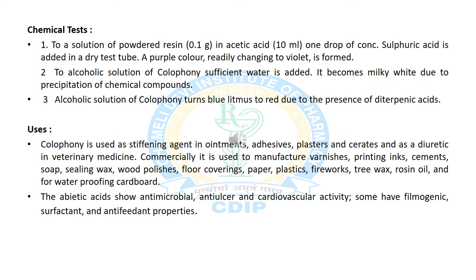Now we will discuss the various chemical tests for Colophony. In the first test, we prepare a solution of Colophony and treat it with acetic acid, then add drop-wise concentrated sulfuric acid, and it shows purple to violet color. In the next test, an alcoholic solution of Colophony treated with water shows milky white precipitation. In another test, an alcoholic solution of Colophony turns blue litmus paper to red in the presence of diterpene acids.